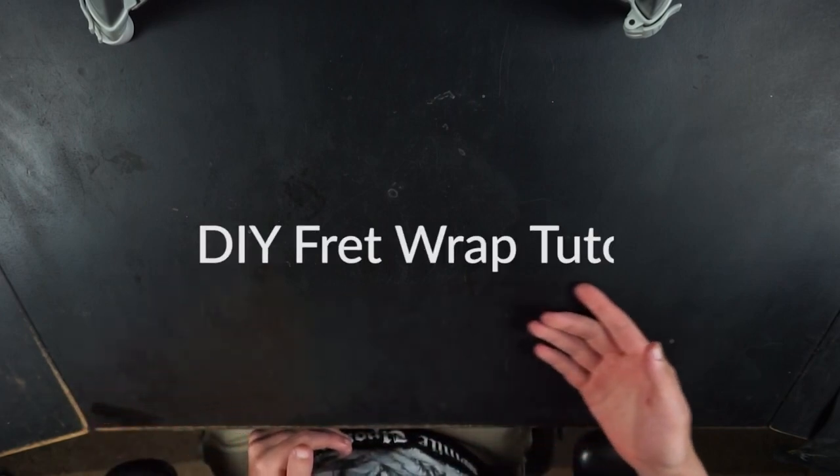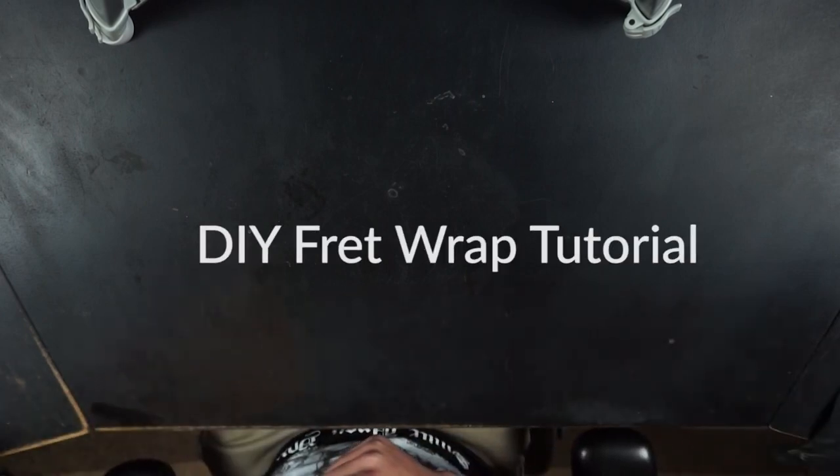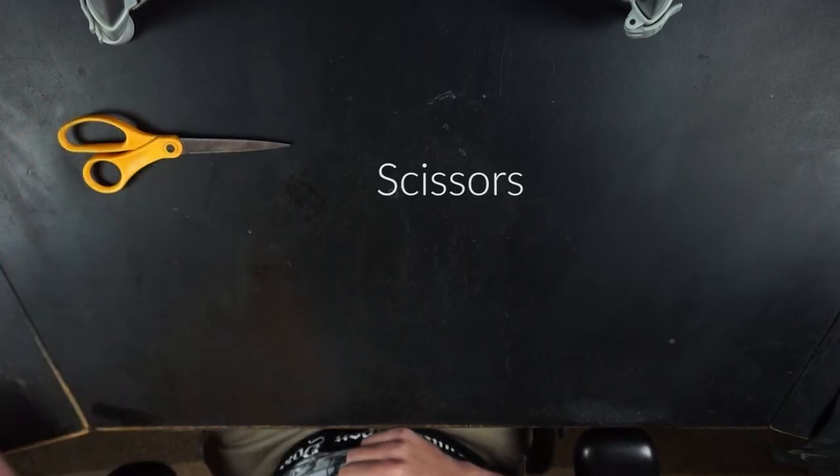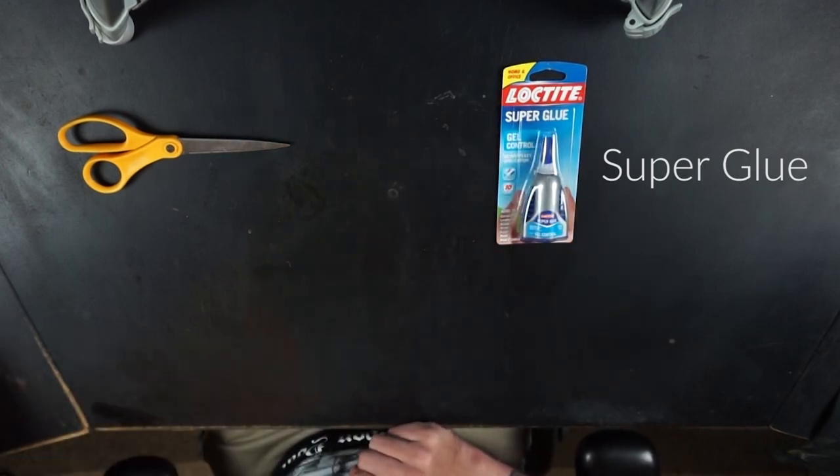What's going on everybody, today I'm here to give you a tutorial on how to make a DIY fret wrap. Some of the things we're going to need for this: we're going to need a pair of scissors to cut your fabric, we're going to need some super glue to glue everything together.